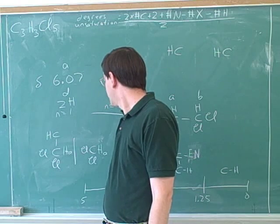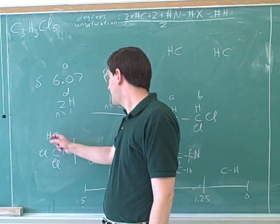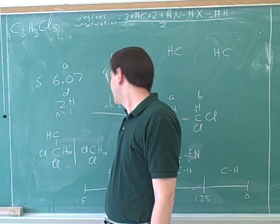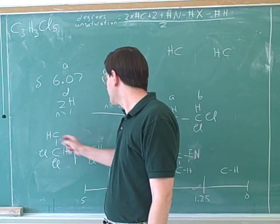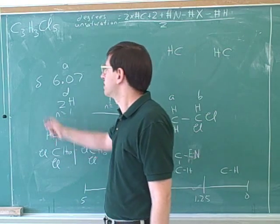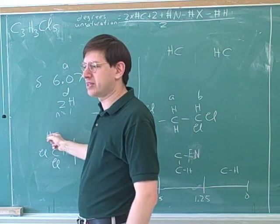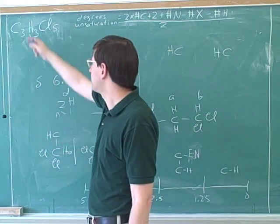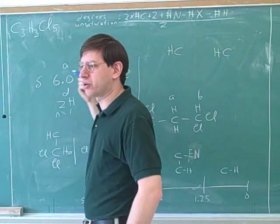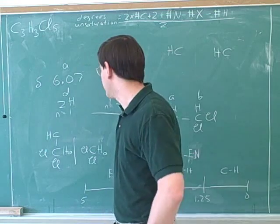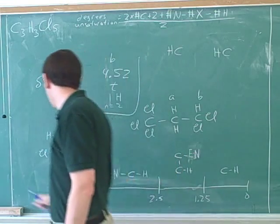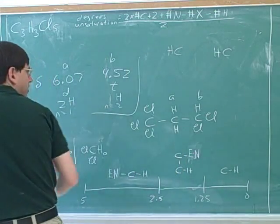So I can put this one hydrogen over here on this. And now, who else is attached to this? Well, this carbon must also be attached here, because there are only three carbons total. This carbon must also be attached to this carbon, because we only have three carbons total. So now we can start to build out the whole molecule.